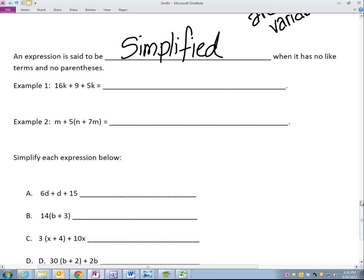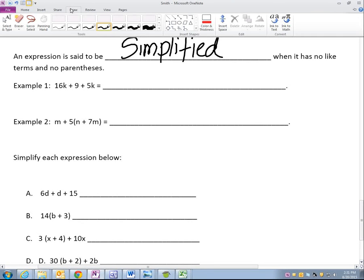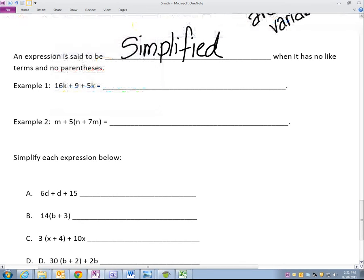Like terms are shared variables. Like terms are shared variables. For example, we have a like term here with M. Like terms here with K. So we need to combine those two. We need to combine those like terms.